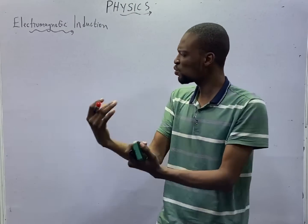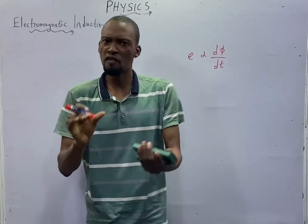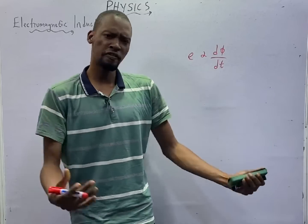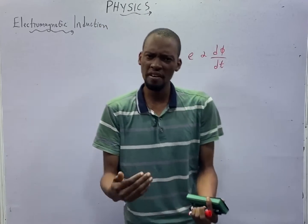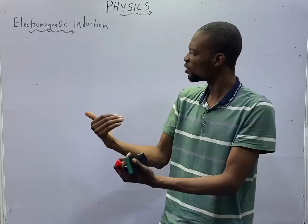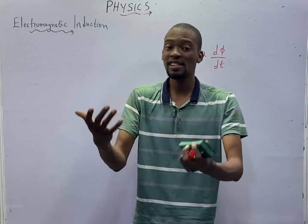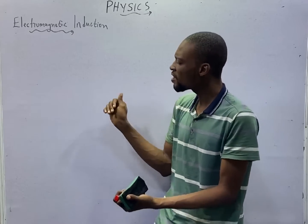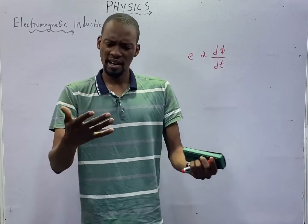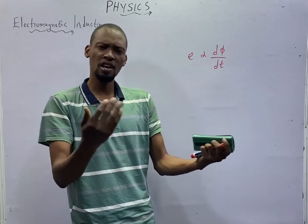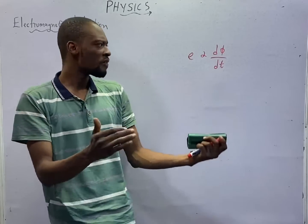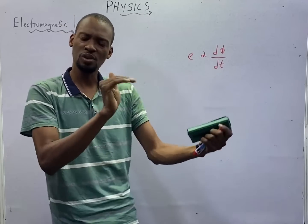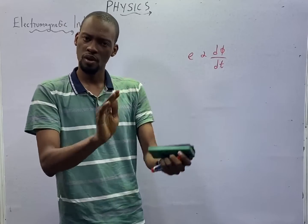Faraday has two laws of electromagnetic induction. The first law states that whenever a conductor is placed in a varying magnetic field, EMF is induced, and if this circuit is closed, the induced EMF will give rise to induced current.